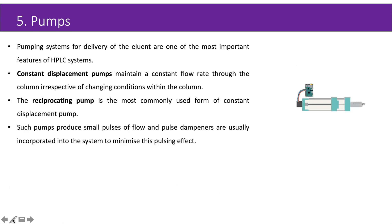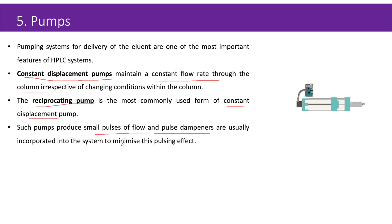Next are the pumps. The pumping system for delivery of the eluent is one of the most important features of HPLC systems. A constant displacement pump maintains a constant flow rate through the column irrespective of changing conditions within the column. The reciprocating pump is the most commonly used form of constant displacement pump; such pumps produce small pulses of flow, and pulse dampeners are usually incorporated into the system to minimize the pulsing effect.